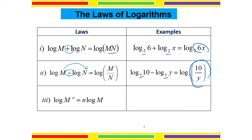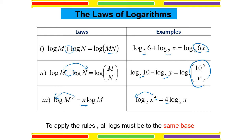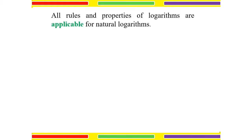The last law is the power law: log of M to the power of N. We can bring the power to the front as the coefficient of the log. For example, log base 2 of X to the power of 4 — the 4 becomes the coefficient — so it will be 4 times log base 2 of X. To apply the rules, all logs must be to the same base. This is really important.